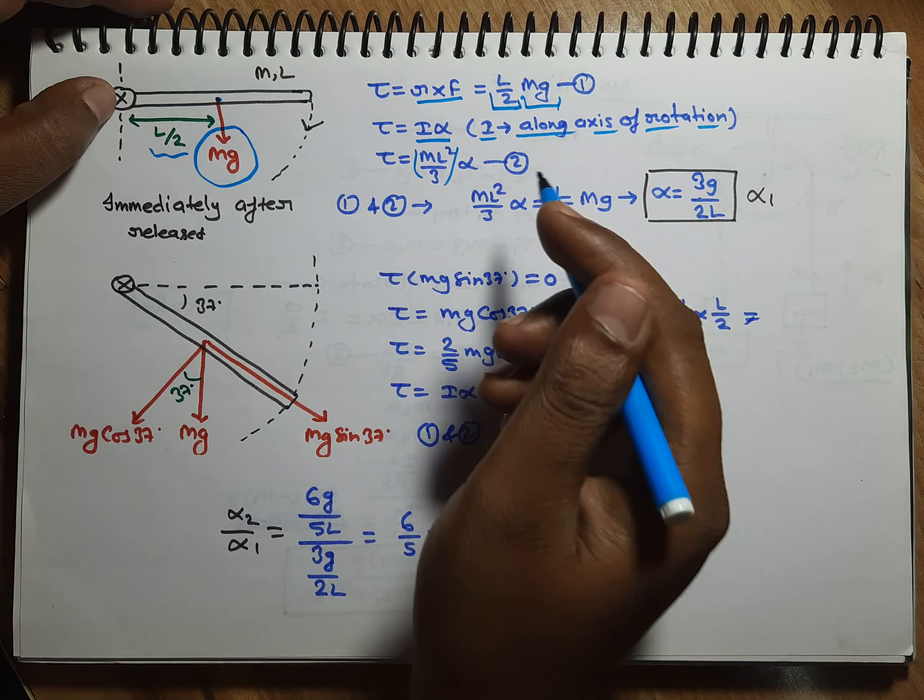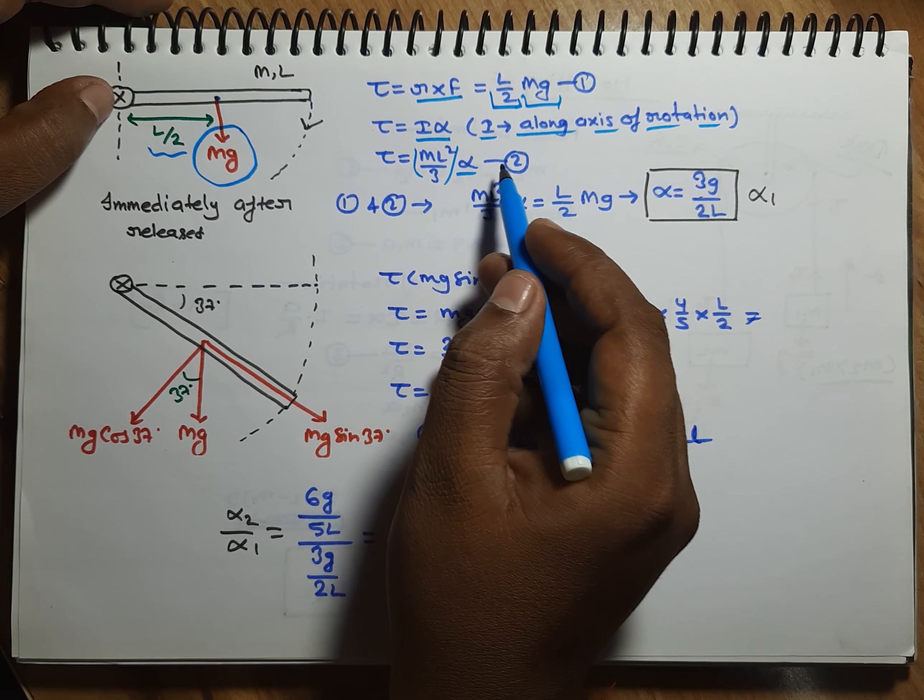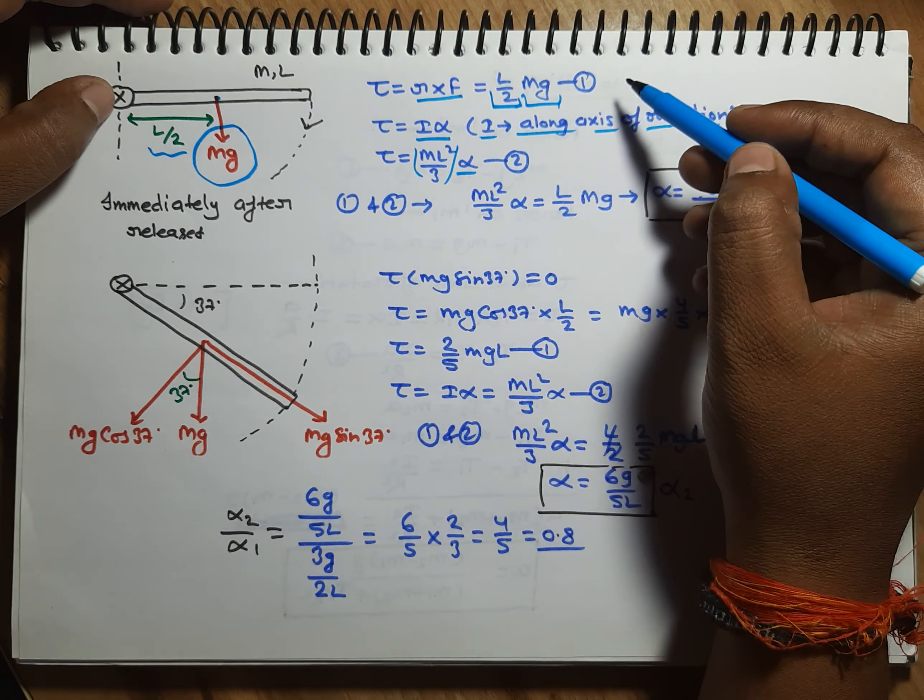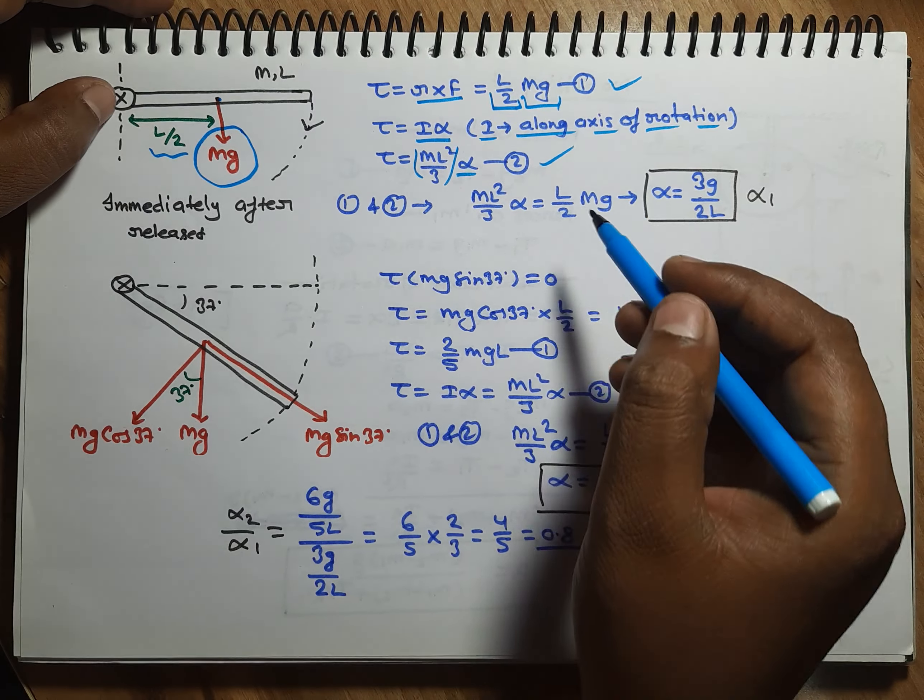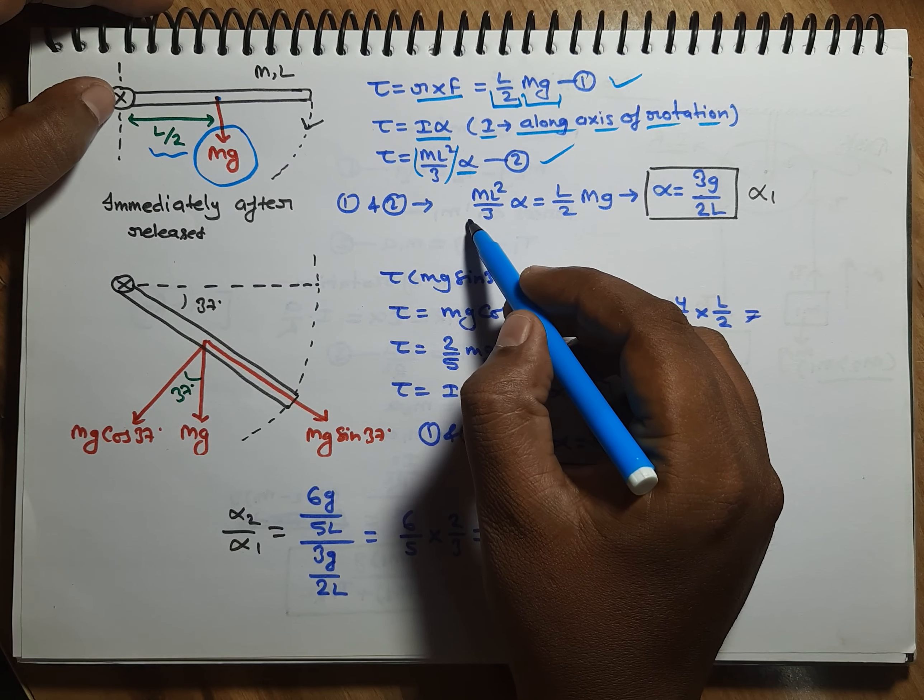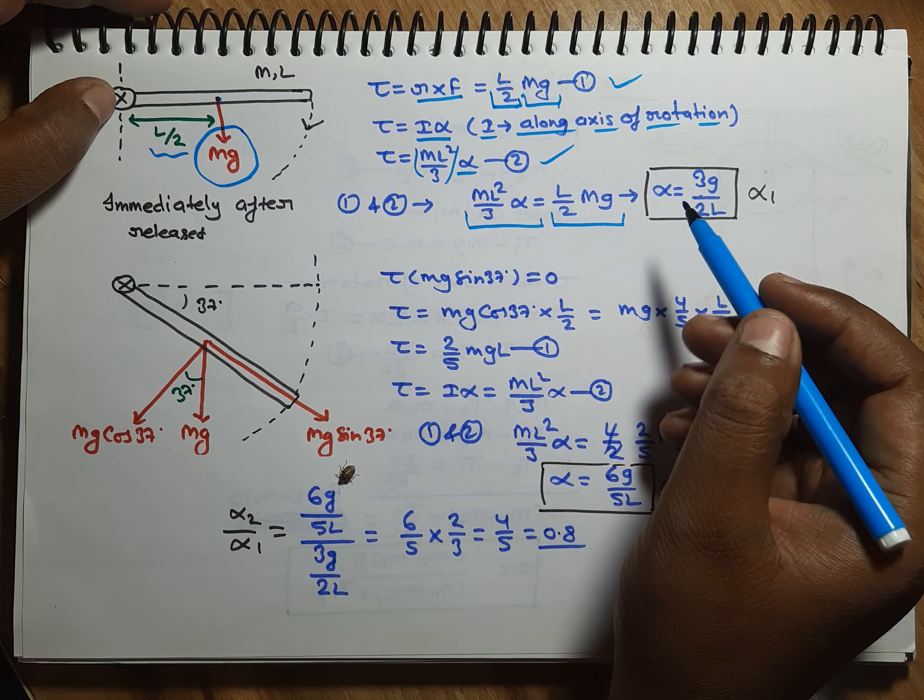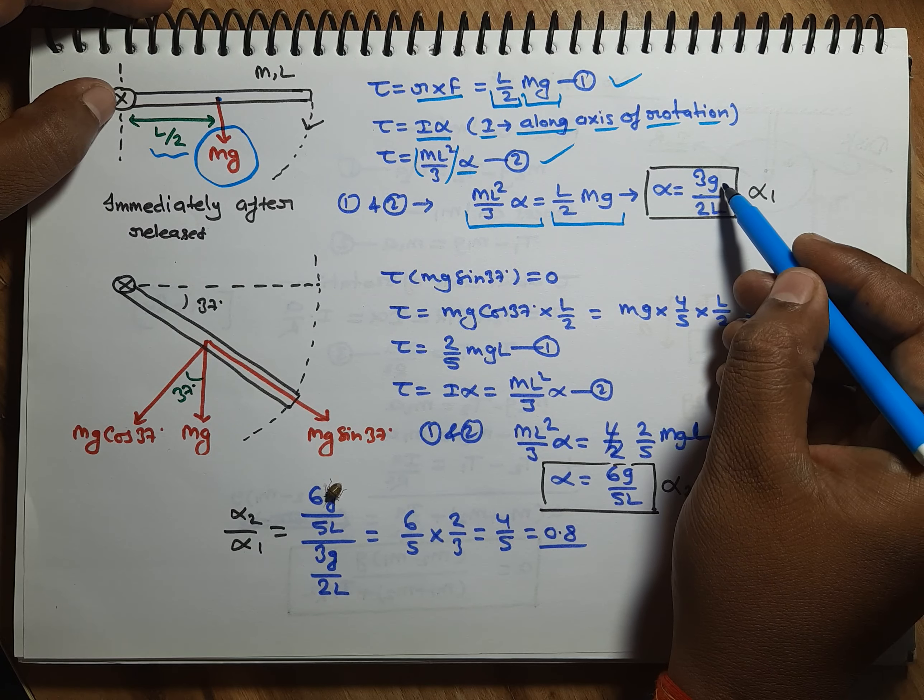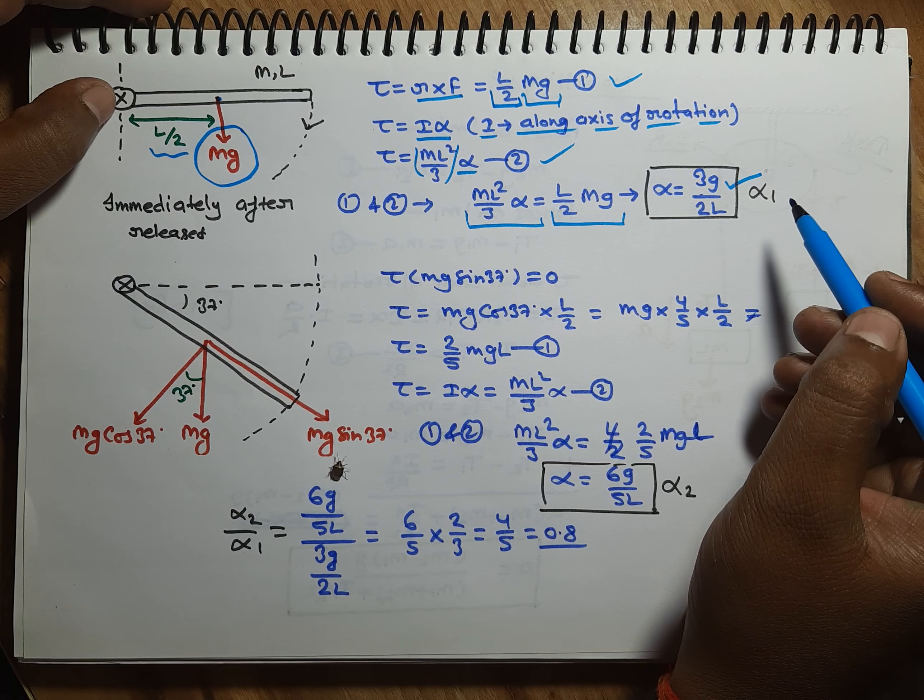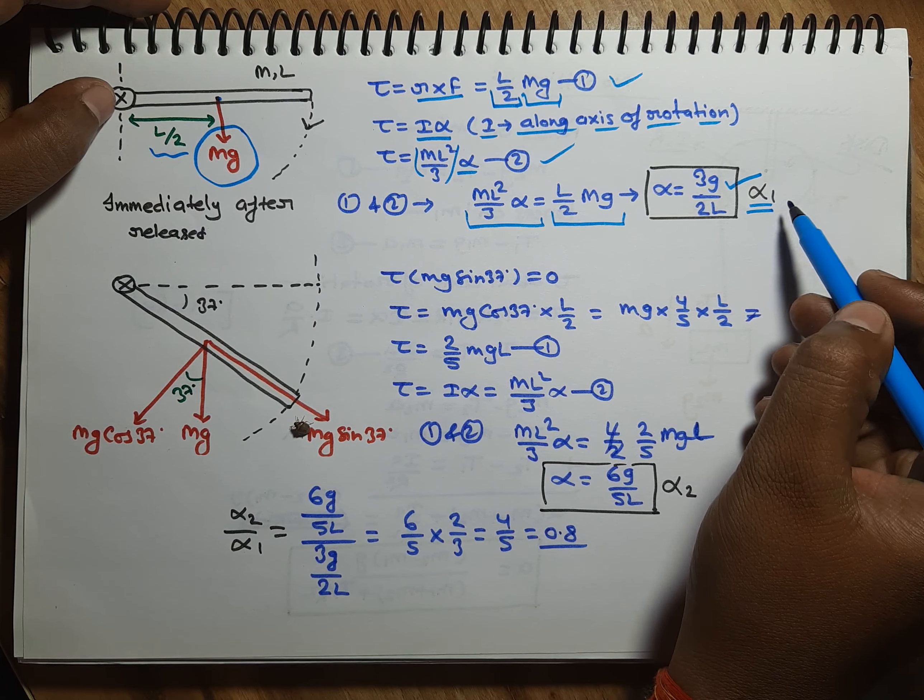Put the value here friends, so what will happen: torque = ML² by 3 into α. Now equate equations 1 and 2, so what will happen: ML² by 3 into α equals L by 2 into Mg. So from here, α value will be 3G by 2L, and this will be α₁.